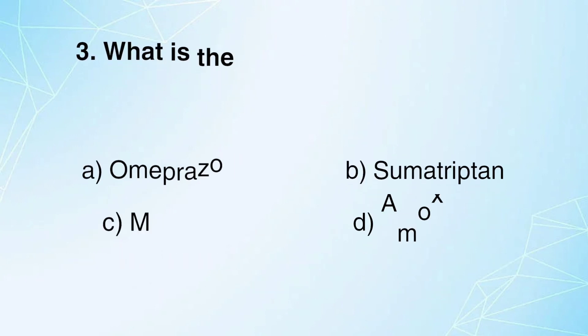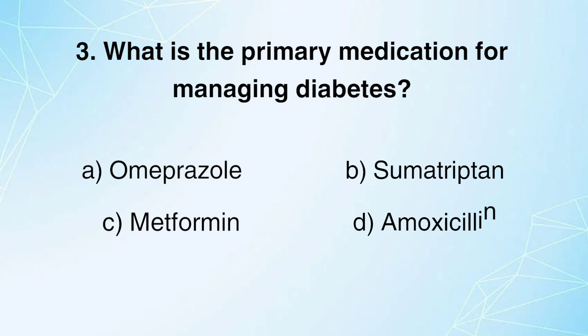What is the primary medication for managing diabetes? A. Omeprazole. B. Sumatriptan. C. Metformin (Glucophage).